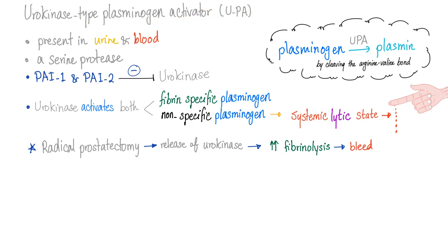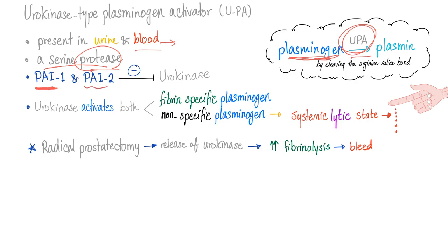Urokinase-type plasminogen activator, or UPA, is present in the urine and blood — it better be in the blood because fibrinolysis occurs in the blood. It is a serine protease, which makes sense because plasminogen is a protein and you need a protease to break it down. PAI-1 and PAI-2, plasminogen activator inhibitors 1 and 2, are going to inhibit this urokinase.